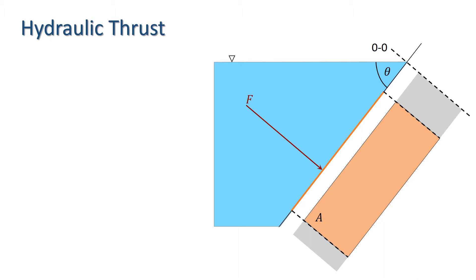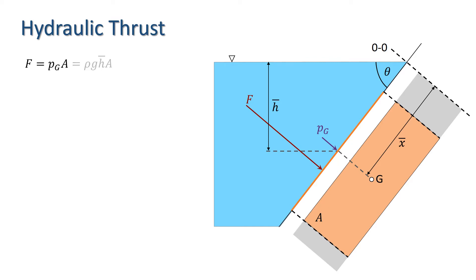Let's remind ourselves of what the direct formula method tells us about the hydraulic thrust. If X bar is the distance of the centre of gravity of A from OO measured in the plane of the surface, and H bar denotes the depth or pressure head at that point, then the magnitude of the thrust is given by the pressure at the centre of gravity of A, denoted G, multiplied by the area, which is rho G H bar times A. However, the thrust does not act through the centre of gravity — its line of action is through the centre of pressure, denoted C. The centre of pressure is the point of application of the hydraulic thrust F, which produces the same rotational momentum effect around the axis OO as the hydrostatic pressure distributed over the surface of interest.